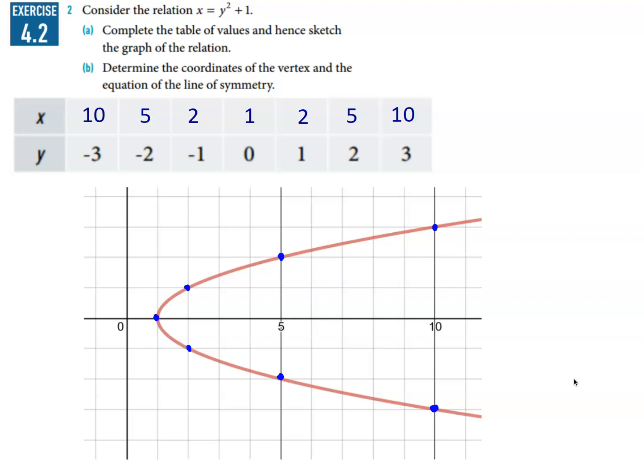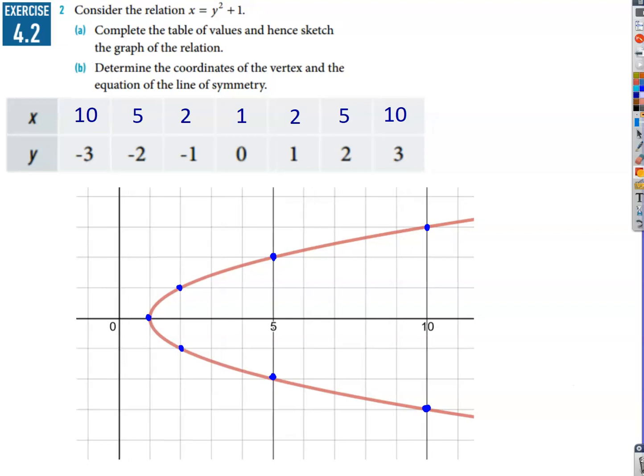Okay, so that by the way is not a function. It doesn't pass the vertical line test. If you remember the vertical line test, if you draw a vertical line anywhere where the x coordinate exists, such as there...